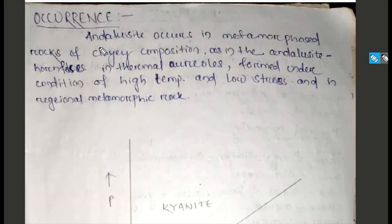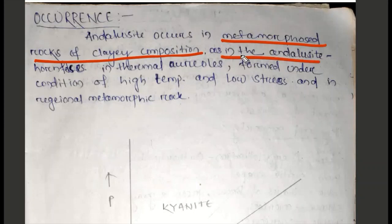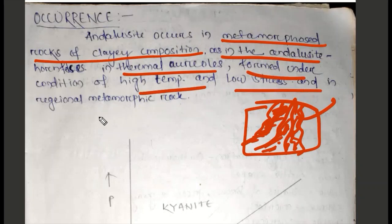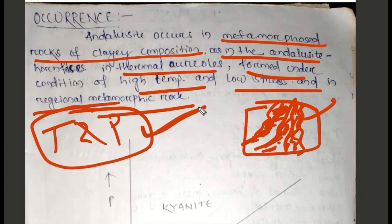Occurrence: Andalusite occurs in metamorphic rock, both contact metamorphic rock and regional metamorphic rock. Andalusite forms in thermal aureoles from magmatic intrusion. The magma intrusion causes temperature effects on the surrounding rock through contact metamorphism, leading to recrystallization. Contact aureole is formed under conditions of high temperature. It also occurs in regional metamorphic rock under both temperature and pressure.